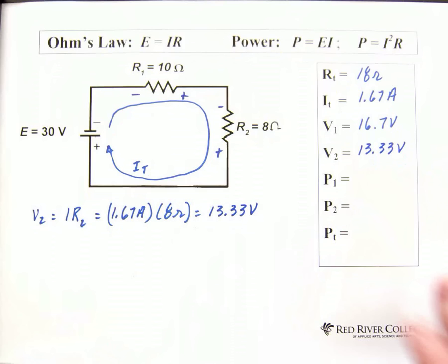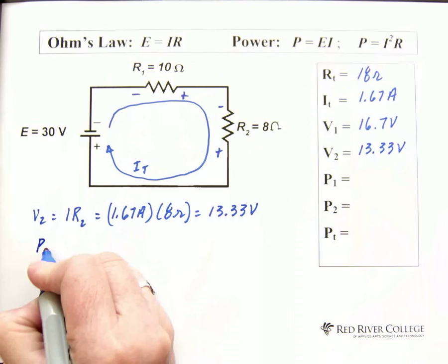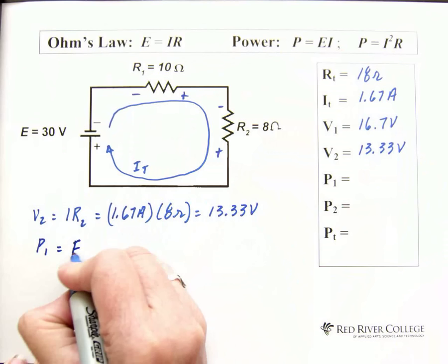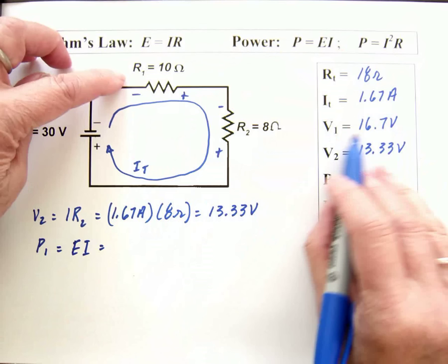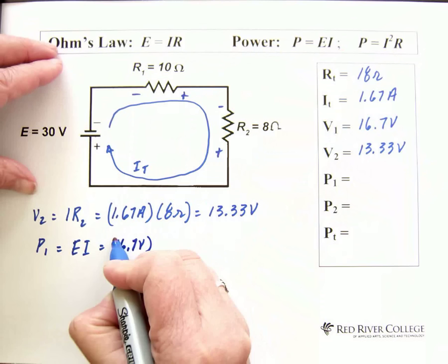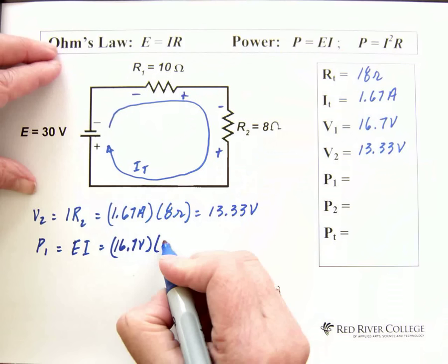Now, we're going to solve for our power across resistor 1. Power across resistor 1. And I'm going to use this formula, EI. So, the voltage times the current. Now, the voltage across resistor 1 is this one. 16.7 volts. And the current through resistor 1 is our I total. Which is 1.67 amps.